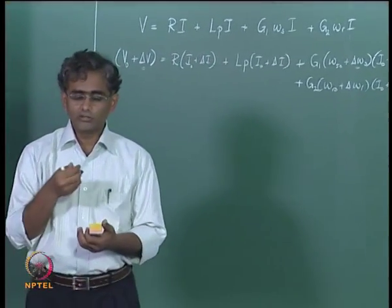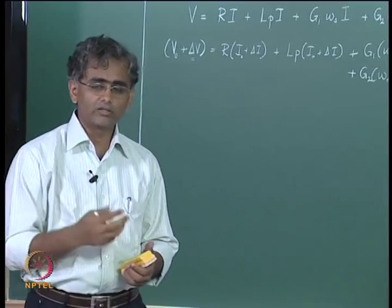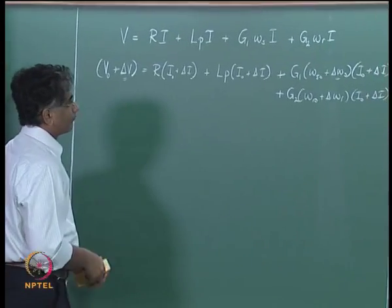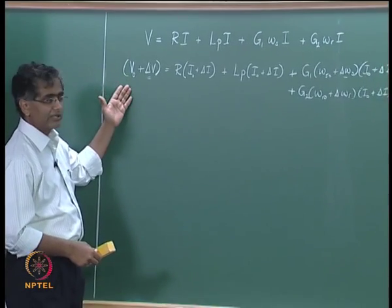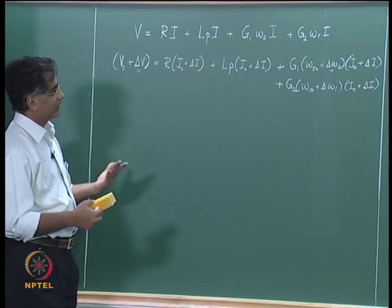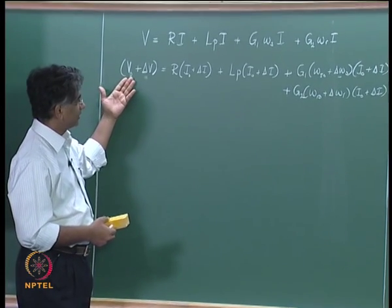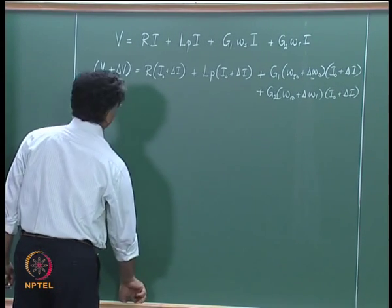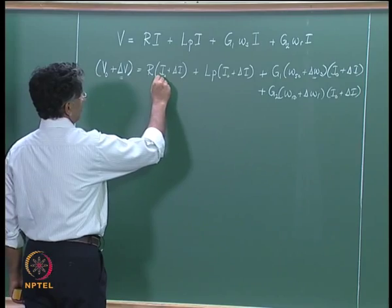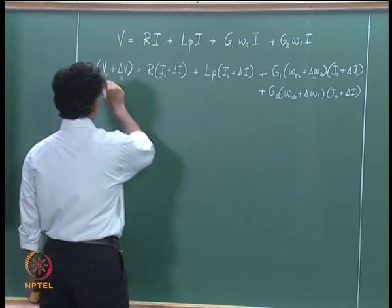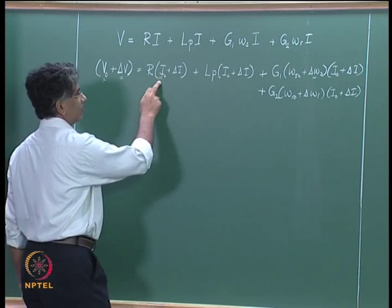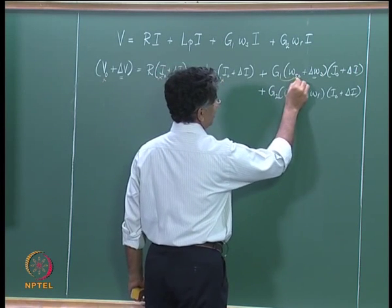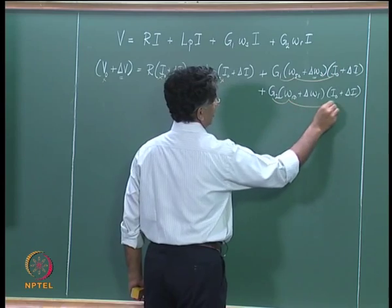This equation consists of both steady-state terms and disturbance terms. The steady-state terms must by themselves be equal on both sides and can therefore be removed. V0 equals R·i0 plus L·p·i0 plus G1·ωs0·i0 plus G2·ωr0·i0, and these terms cancel from both sides.